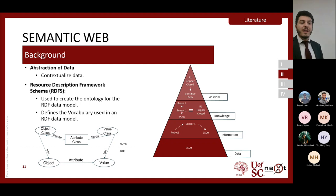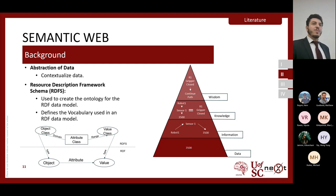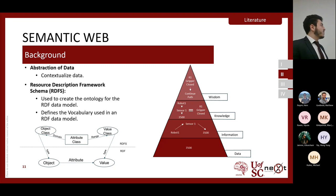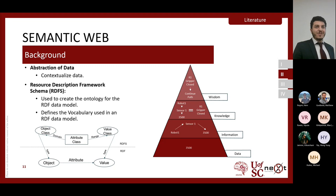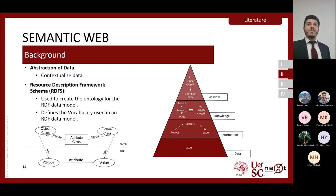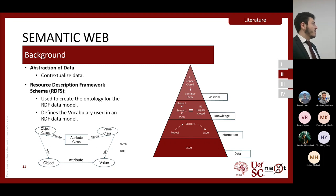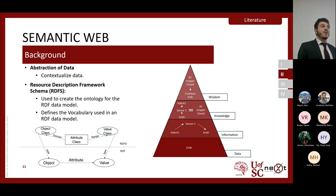A prominent semantic web technology is the Resource Description Framework (RDF), a modeling language that helps link different entities together. In RDF you create triples, which connect an object and a value through an attribute. There are two parts: the top schema defines your ontology — similar to creating a library with methods — and then you instantiate objects connected to values through attributes. In our example, we have two separate triples: sensor one with the sensor value, and sensor one with robot one.